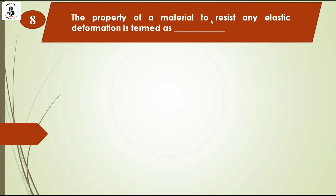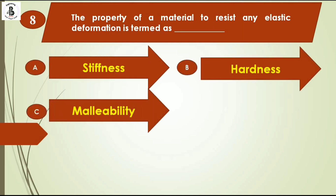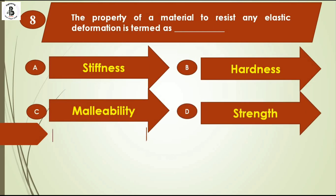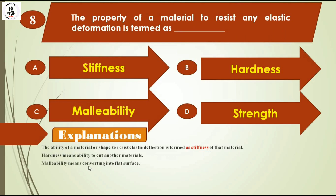The property of the material to resist any elastic deformation is termed as: option A stiffness, option B hardness, option C malleability, option D strength. The ability of a material or shape to resist elastic deformation is termed as stiffness. Hardness means the ability to cut another material. Malleability means converting into a flat surface. Strength is the capacity of a material to withstand great force or pressure. So the right answer is stiffness, option A.